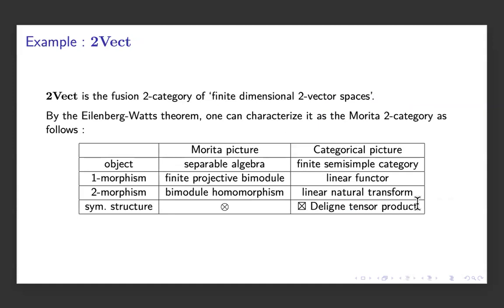The most fundamental example is 2Vec, the fusion two-category of finite-dimensional two-vector spaces. There are two equivalent descriptions related by the Eilenberg-Watts theorem. You can consider objects as finite semisimple linear categories with functors and natural transformations, or you can consider it as the Morita two-category where objects are algebras and morphisms are bimodules. The symmetric monoidal structure corresponds to the Deligne tensor product on the linear-category side, and the ordinary tensor product of algebras on the Morita side.